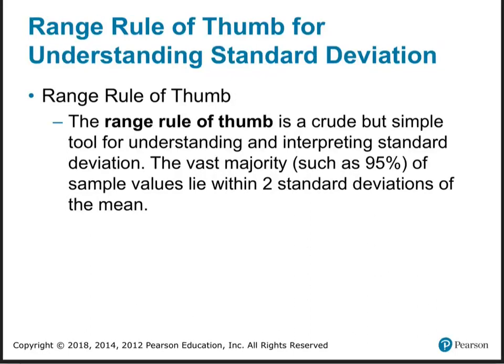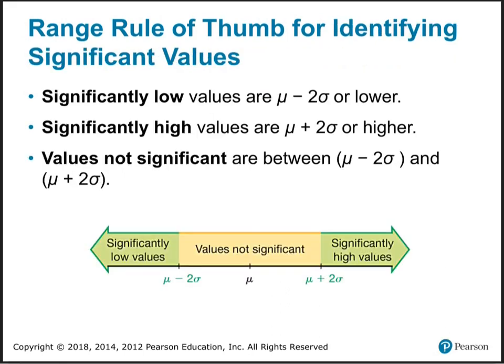Let's talk about the range rule of thumb. We're in section 3.2, which is all about variation — how much things vary. We've been talking about standard deviation. The range rule of thumb is a crude but simple tool. It basically says 95 percent of data values lie within two standard deviations of the mean.